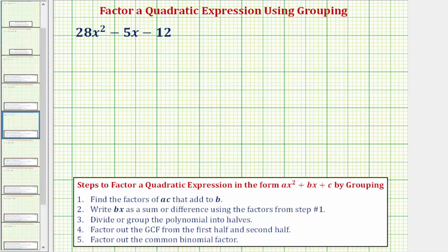So let's begin by identifying the values of a, b, and c. A, the coefficient of x squared, is 28. B, the coefficient of x, is negative five. And c, the constant term, is negative 12.